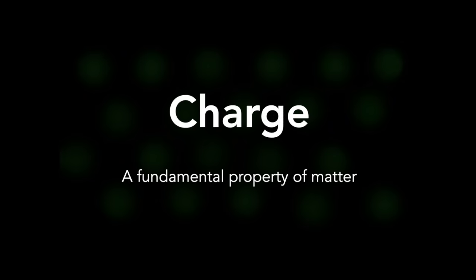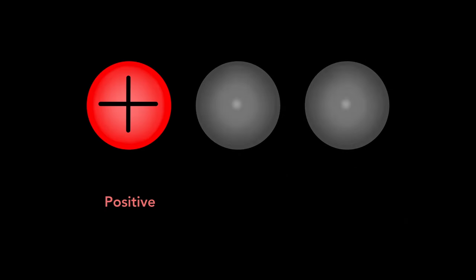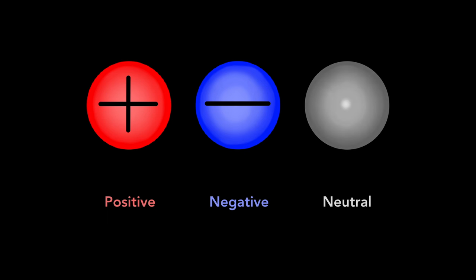To begin our exploration, we need to understand a couple of key words. The first is electric charge, which is a basic property of matter. The particles that make up ordinary matter may carry a positive charge, a negative charge, or no charge at all. Those with no charge are said to be electrically neutral — they do not generate electrostatic forces by themselves.